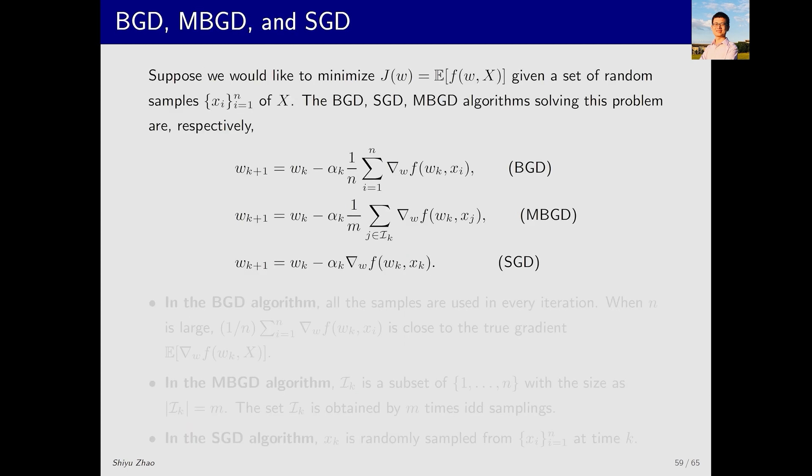The problem we are studying remains the optimization of an objective function, J(w), using a set of samples. Assuming there are n samples X_i, we use them to optimize the objective function. We have three methods.